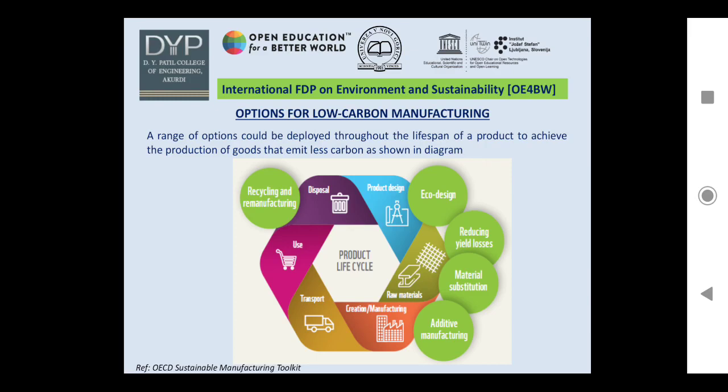For example, in the product design phase, eco design is one of the options. When considering raw materials, reducing yield losses and material substitution are two possible options. In manufacturing, modern technologies such as additive manufacturing can help. For recycling or disposal, recycling and remanufacturing are available options.